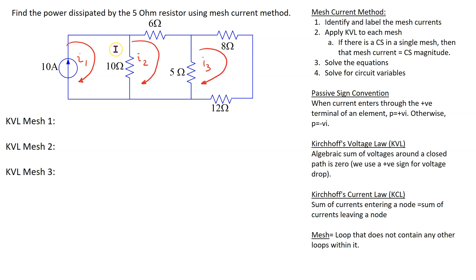Here we can see that I1 is flowing through this mesh, and there is a current source in this mesh, and the direction of the current source is the same as the mesh current I1. Therefore, this simplifies the process, and we can just write I1 is 10 amps directly by inspection.